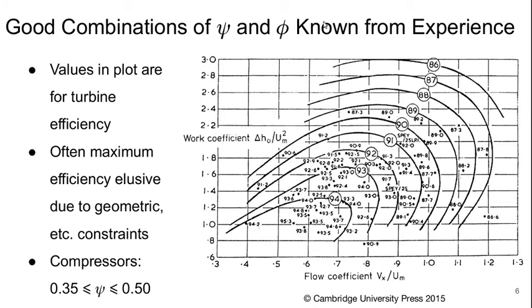For compressors, there's no equivalent universal plot like this. But the typical range of work coefficient is between 0.35 and 0.5. One more thing about this chart. You'll see all these data points that indicate values of efficiency at certain combinations of work and flow coefficient. Those all represent actual turbines.